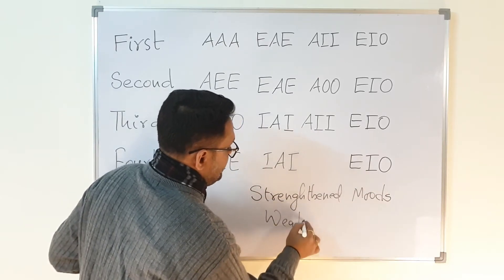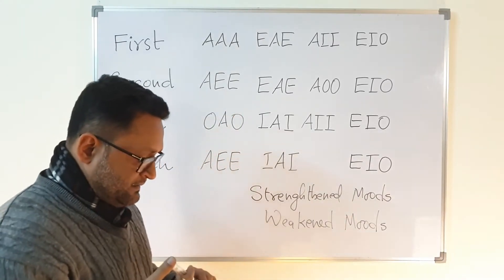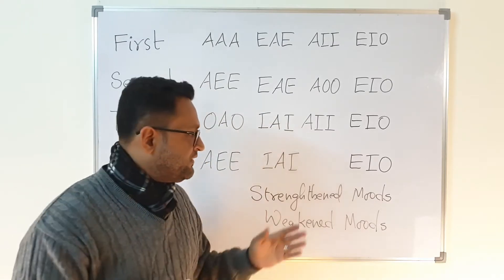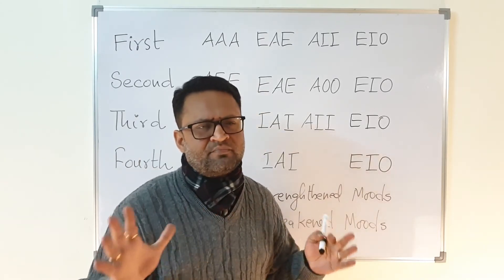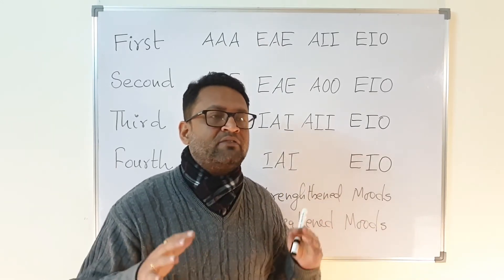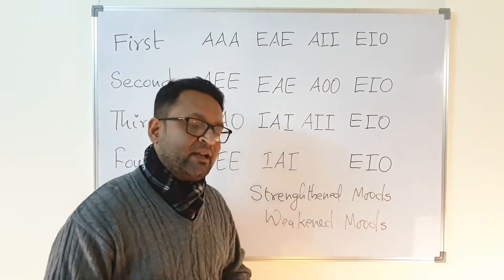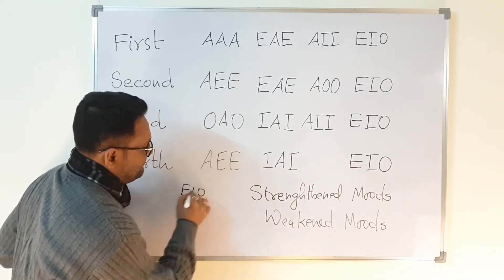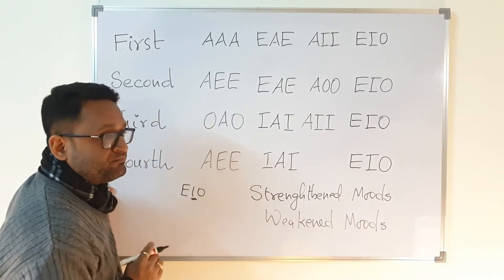Vis-à-vis weakened moods. I will not go to the definitions since this is an extra part of the course. I will very simply try to make you understand what is basically a standard mood or a weakened mood with the help of an example. Suppose EIO is valid, and you can see that I is a particular affirmative proposition.